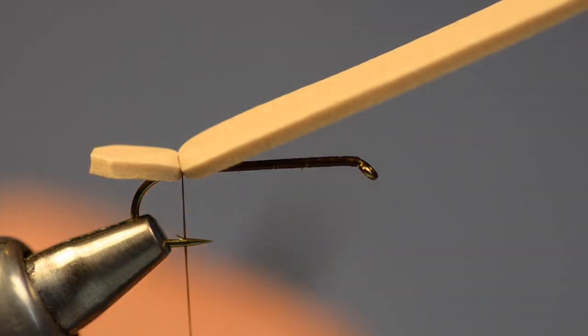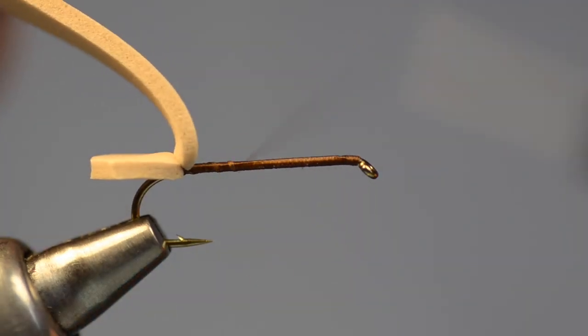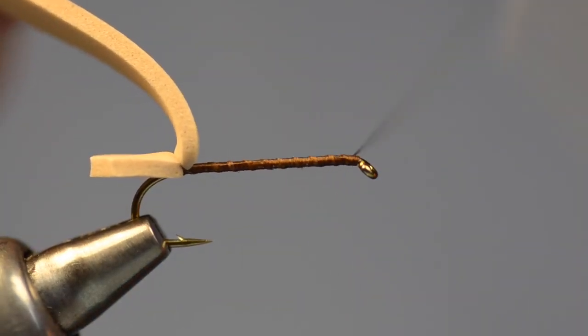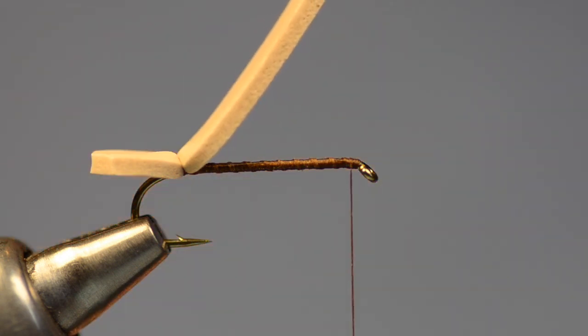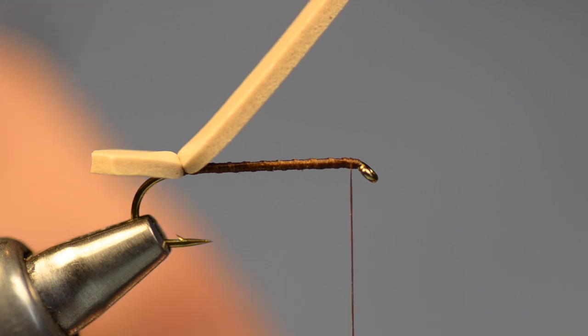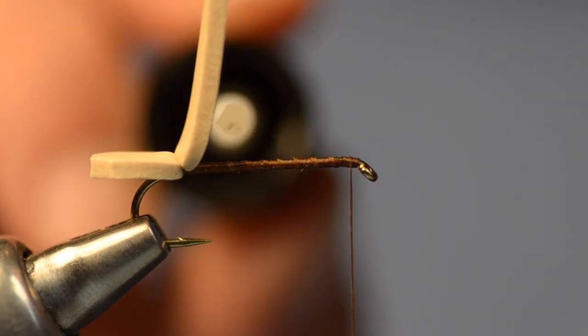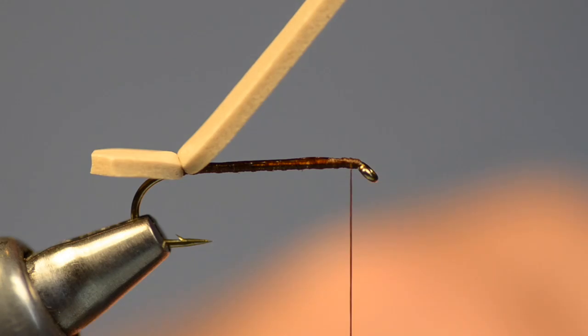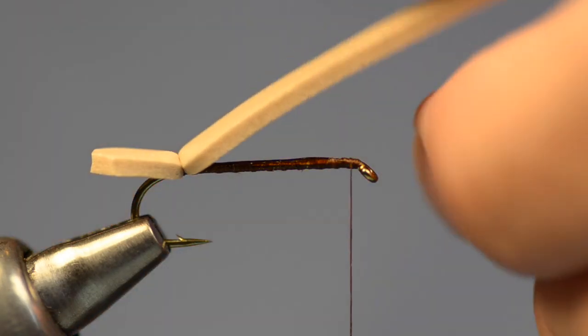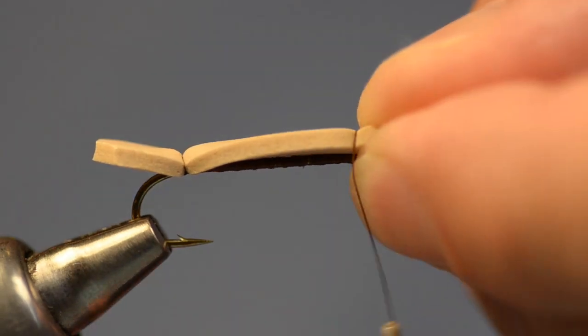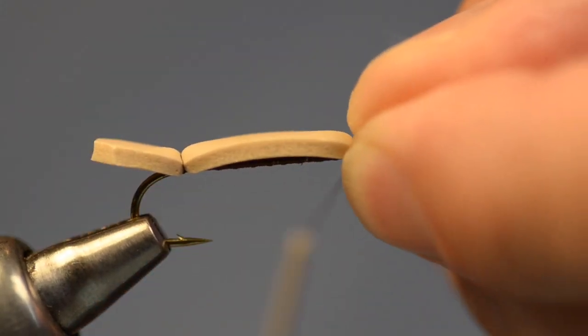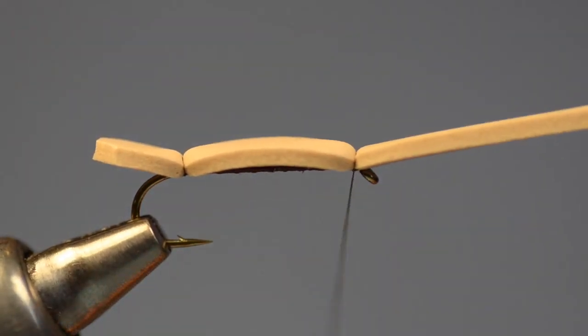And then I'm going to bring my thread all the way up to the hook eye. You can see I just did spiral wraps there and I'll take some zap-a-gap and in all cases with zap-a-gap less is more so just a thin layer down the hook shank, don't get carried away with it. Then I'm going to lay this piece of foam down again and tie it down just behind the eye. And I want to try to keep it centered on top.